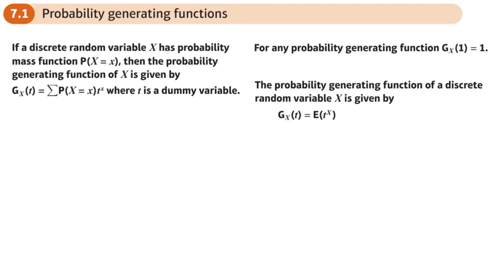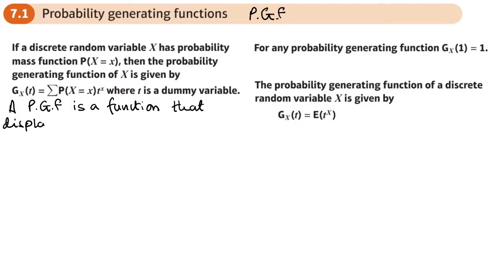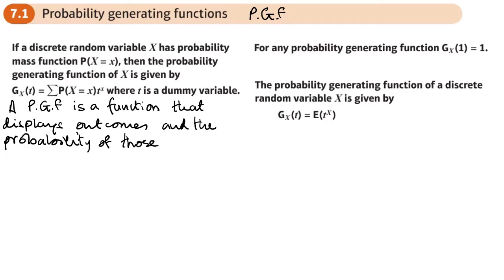This is the first section of the probability generating functions chapter. We might call them a PGF for shorthand. A PGF, probability generating function, is a function that displays outcomes and the probability of those outcomes, and this is for discrete random variables.